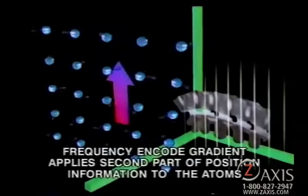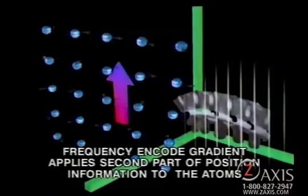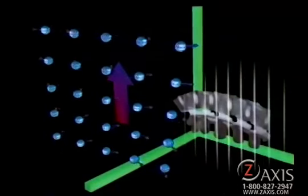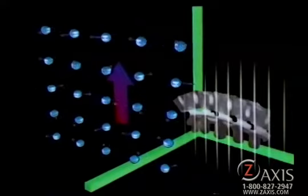Next, another magnetic gradient at right angles to the first forces the protons to spin at different frequencies depending upon the strength of this field. These different frequencies will be used to determine the proton's position along the y-axis of the patient.